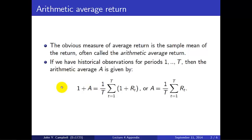Then what we're going to do to calculate the arithmetic average return is the following. Let's start with gross returns, one plus little r for each period. We sum over the capital T periods that we have and then divide by the number of periods. That will give us a gross arithmetic average return, one plus A.